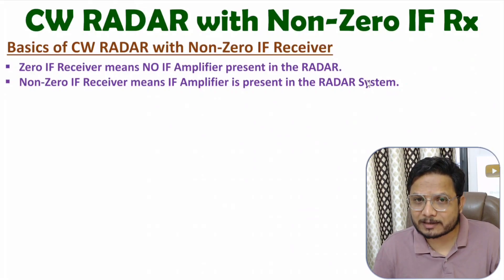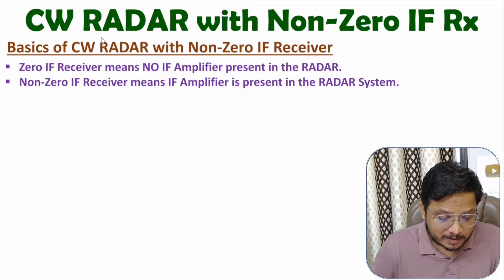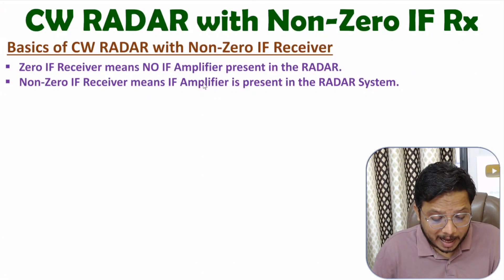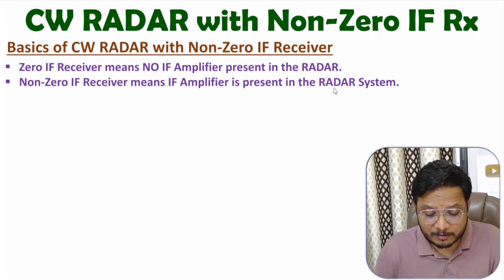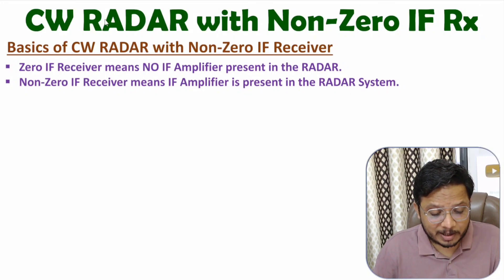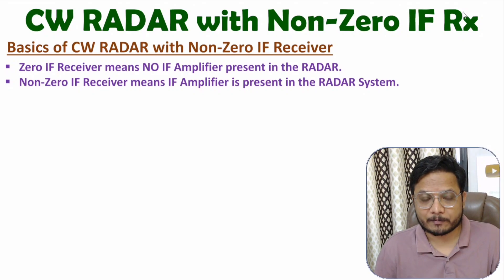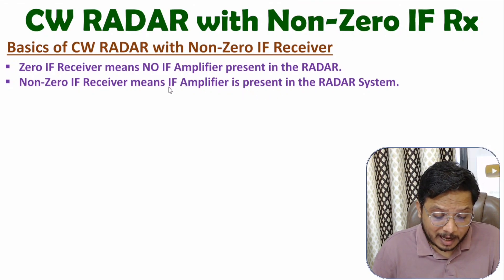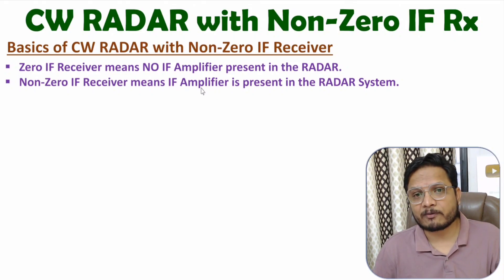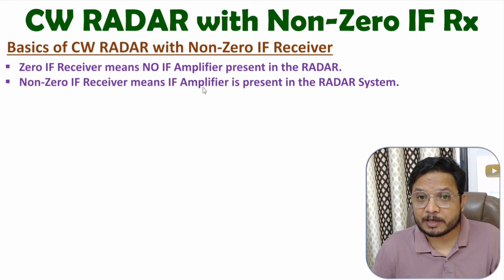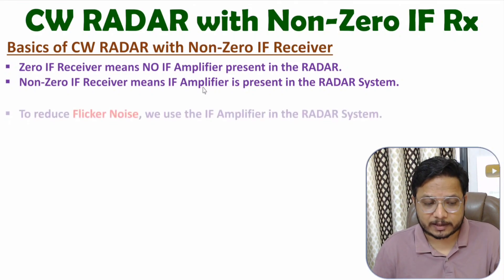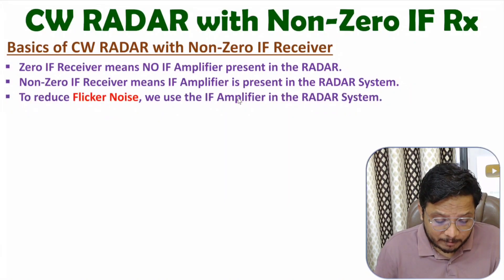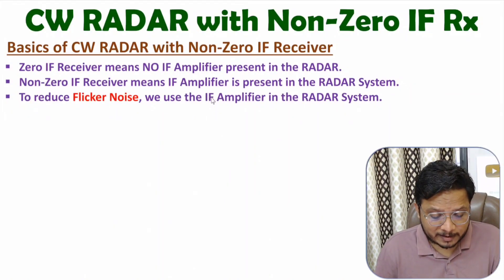With this given system, we have an IF amplifier in the receiver of the radar system — that's why the name is CW radar with non-zero IF receiver. Now the question is: why should we use an IF amplifier in the receiver of the radar system? We use it to reduce flicker noise. If you use an IF amplifier in the receiver of the radar system, then we can reduce flicker noise.